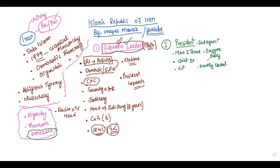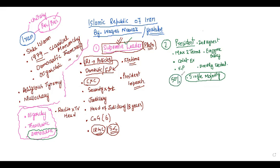ایران کی جو economic policy ہے اسکو shape کرنا، determine کرنا، economic matters کو deal کرنا — یہ Iranian president کا role ہے۔ اور اہم بات یہ کہ یہ directly elect ہوتا ہے — by the people of Iran — through general elections، single majority سے۔ جس طرح Turkey یا France میں ہوتا ہے کہ اگر کوئی بھی candidate 50% majority نہیں لیتا تو re-election ہوتے ہیں، لیکن یہاں جو بھی majority vote حاصل کر لے گا وہ ایران کا president منتخب ہو جائے گا۔